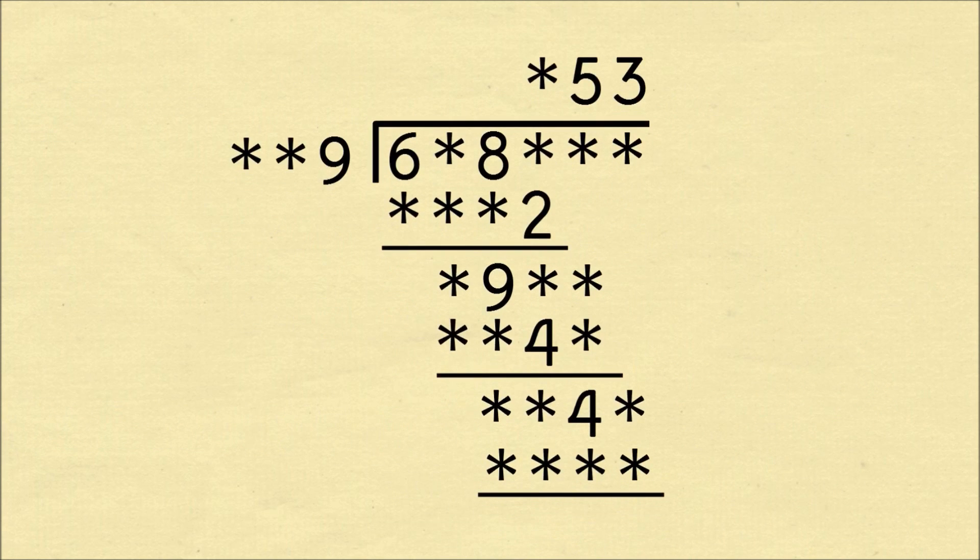Alright, here's the problem. You have a six-digit number starting with six divided by a three-digit number ending in nine that results in a three-digit number ending in five and three. Can you figure out what the missing digits are?